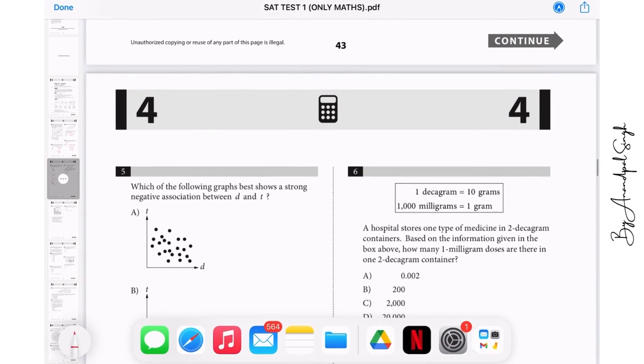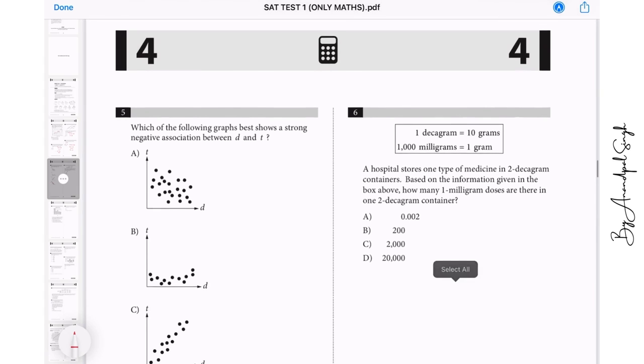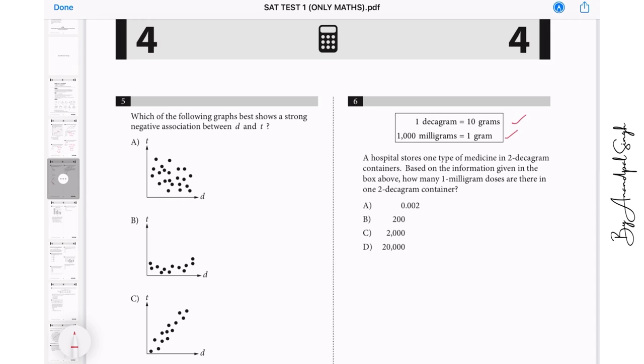Question number six. One decagram is 10 grams and 1000 milligrams is one gram. A hostel stores one type of medicine in two decagram container. Two decagram means two into 10, that is 20 gram. 20 grams, so now we will convert it into milligrams. So 20 into 1000 that will give you milligram. So the answer will be 20,000 milligram.